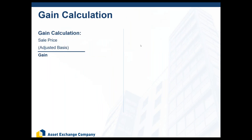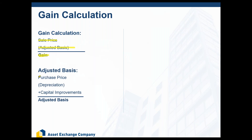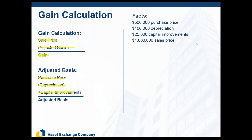Now let's do a little gain calculation. What exactly is everybody being taxed on when they sell their investment property? Gain is what you're being taxed on, and your gain is a function of your sales price and your adjusted basis — you take your sale price and subtract your adjusted basis to get to your gain. To calculate the adjusted basis, you take your purchase price, subtract depreciation, and add capital improvements. For example, if you purchased a property for $500,000 ten years ago, took $100,000 of depreciation, added $25,000 in capital improvements, and are now selling for a million dollars...